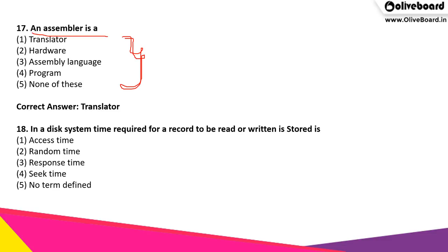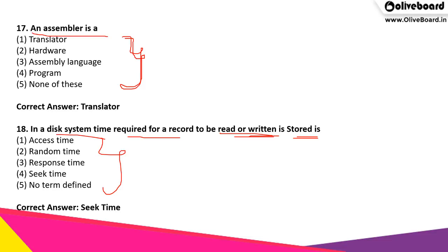In a disk system, the time required for a record to be read or written is stored in what? The correct answer is option 4, that is seek time, which is the time required for a record to be read or written.